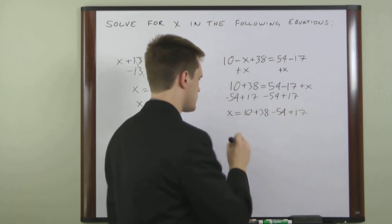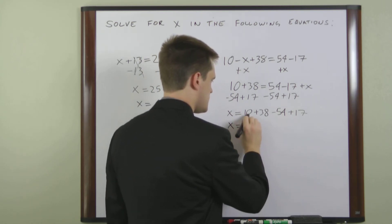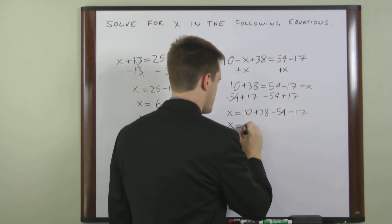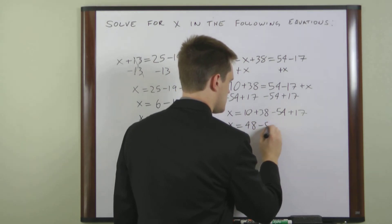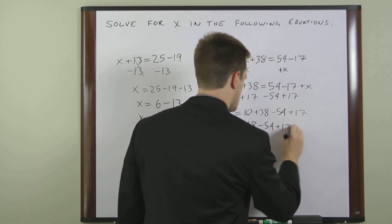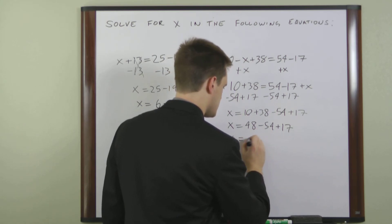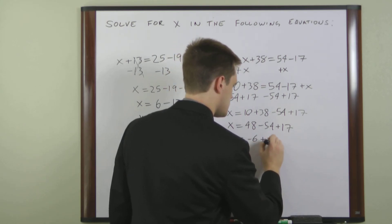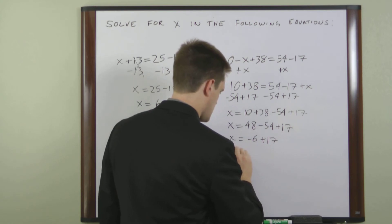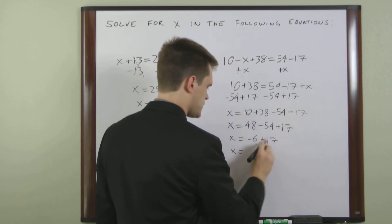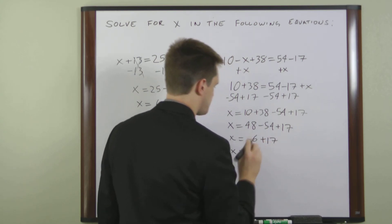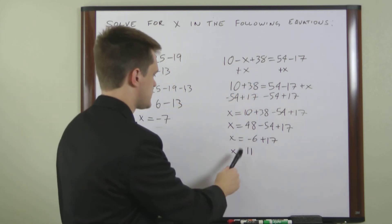And so once again, we'll just do these one at a time. 10 plus 38 is 48. 48 minus 54 is negative 6. And negative 6 plus 17 is 11. So in this equation, x equals 11.